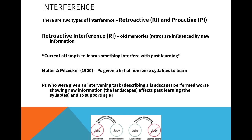Miller and Pilzecker did a study into this where participants were given a list of nonsense syllables to learn — short words that didn't really mean anything. Some participants just learned the word list and had to recall it, whereas others were given another task, such as describing a landscape. What they found was that participants asked to do something else had worse recall. This supports retroactive interference: the old information — the word list — was affected by having to describe the landscape.